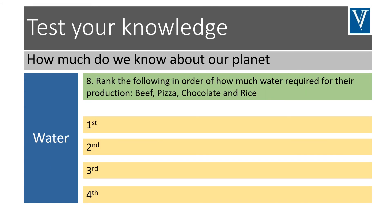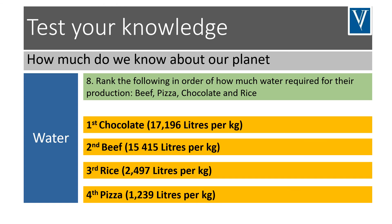How much water does it take to produce our food? Can you rank the following products for highest amount of water required to least amount required in their production: beef, pizza, chocolate, and rice? This one might have surprised you. In first place for water use, we've got chocolate. Second place, beef. Third place, rice. And fourth place, pizza. So the good news is you can feel a little bit less guilty about taking that extra slice of pizza.